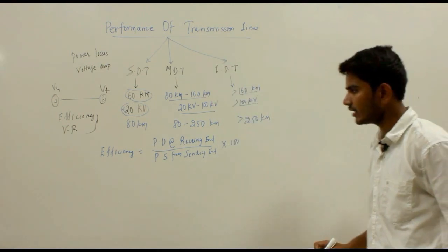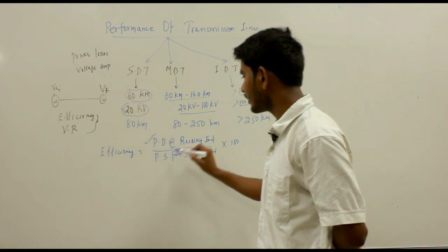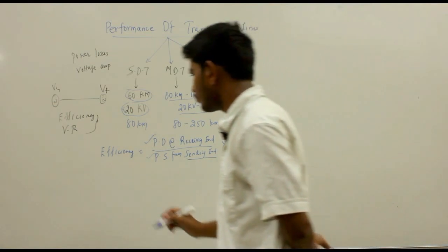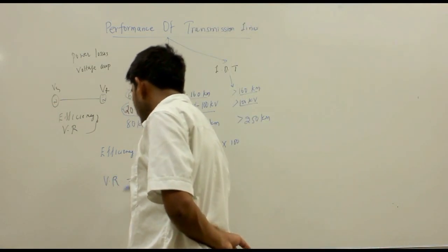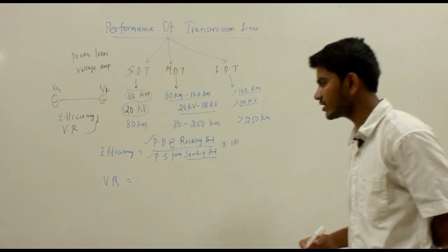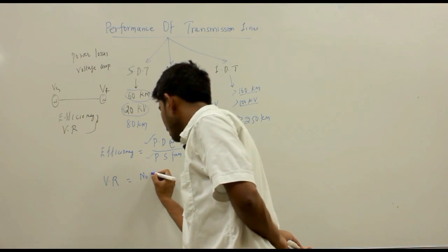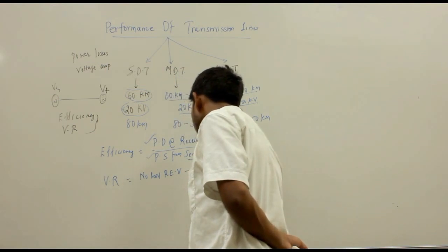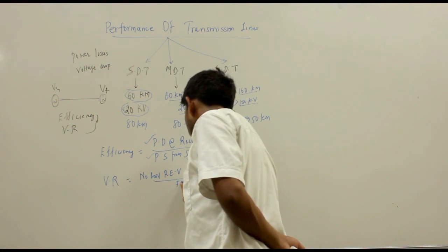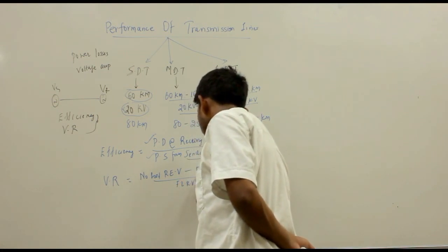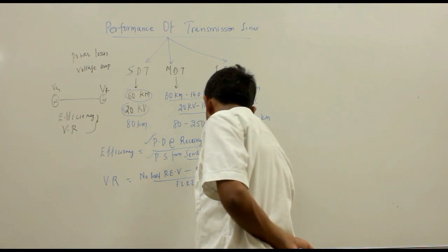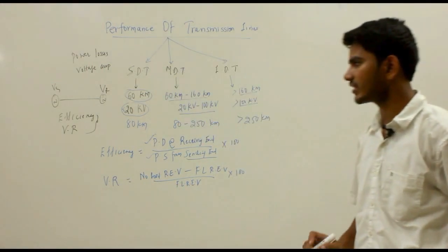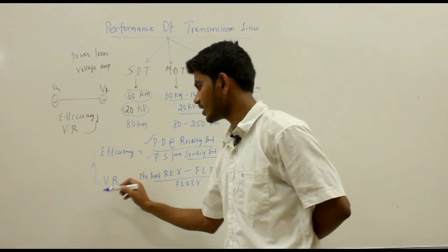The efficiency of any transmission line is the ratio of power delivered at the receiving end to the power sent from the sending end. The voltage regulation is a measure of change in the receiving end voltage from no load to full load condition — that is, no load receiving end voltage minus full load receiving end voltage, divided by full load receiving end voltage, multiplied by 100. The performance of any transmission line can be decided on these two factors: efficiency and voltage regulation.